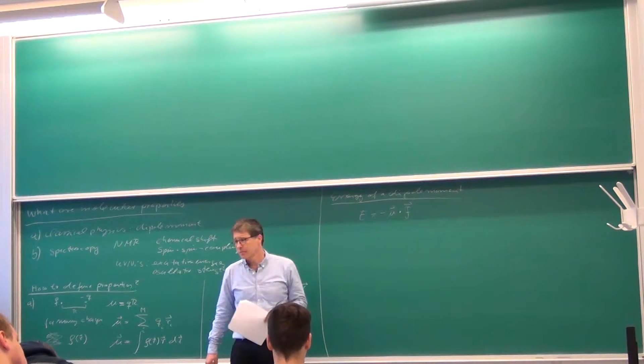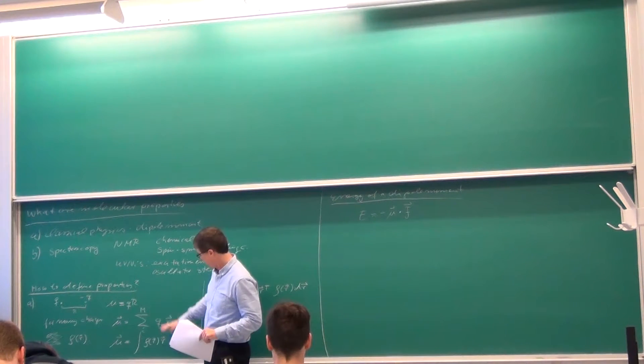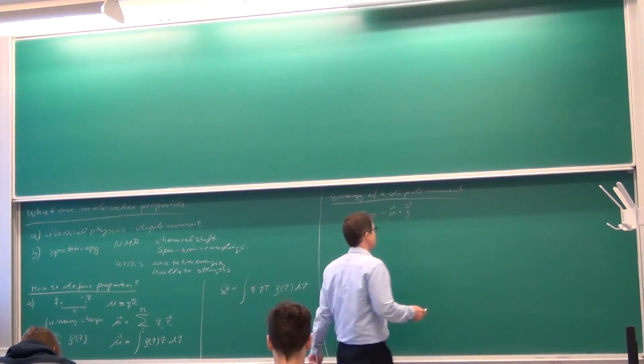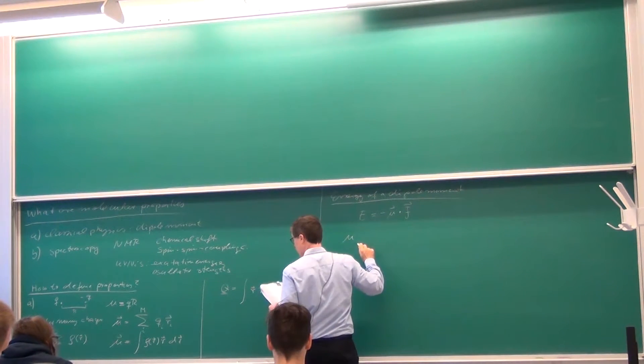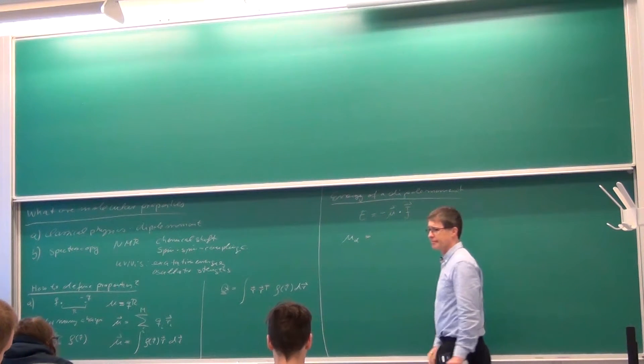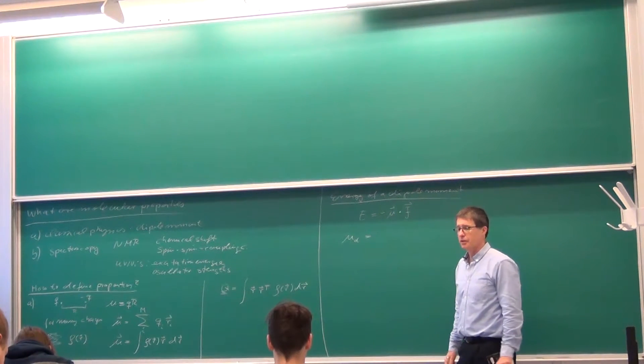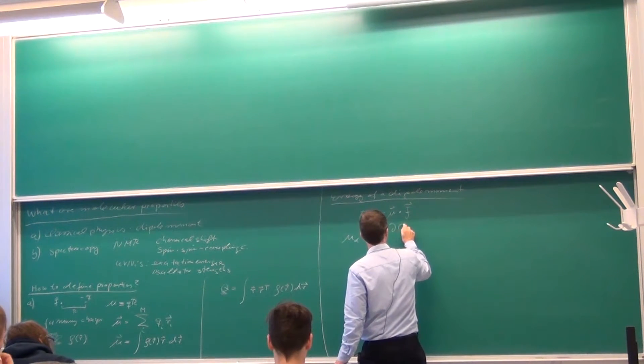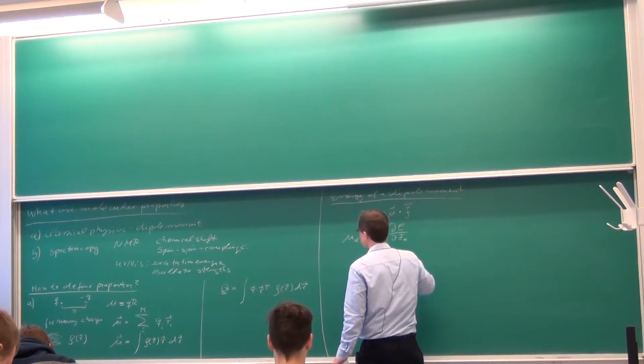And looking at that expression, I'm trying to find definitions of properties. Here I have one, but I can actually use this one also to define it. From this I can write that a component of the dipole moment, let's call it the alpha component, x, y, or z. So Greek subscripts tend to be Cartesian coordinates x, y, z. Well that I can write as minus the derivative of the energy with respect to the field in that direction.